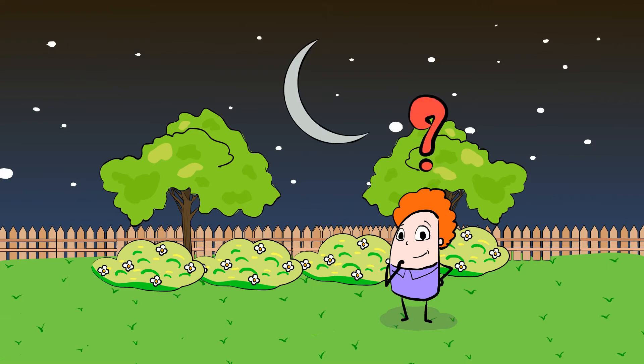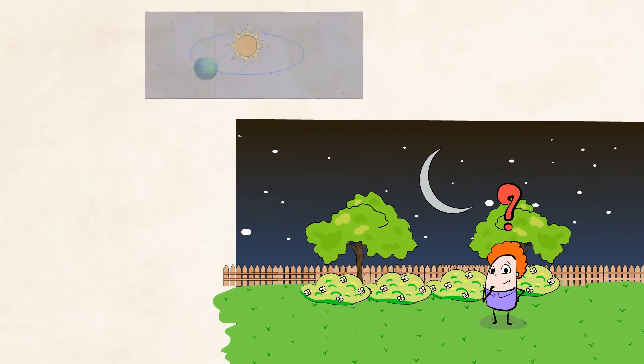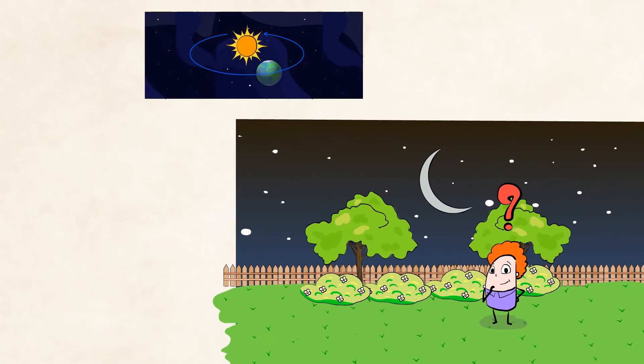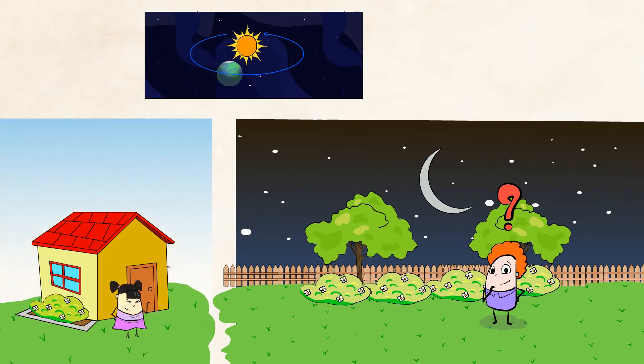Have you ever wondered why it gets dark at night? It isn't a huge curtain being pulled down over the sun. It gets dark because Earth is spinning, and your part of the Earth has spun away from the sun. Someone on the other side of the Earth is enjoying the sun now.